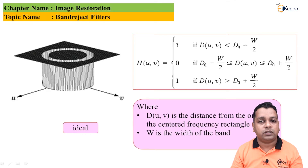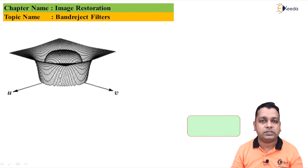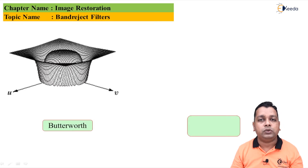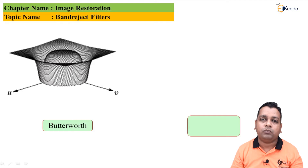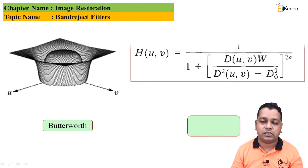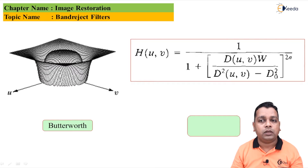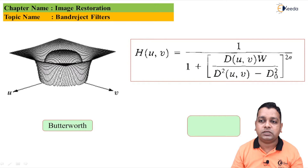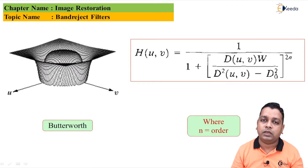Here, D(u, v) is the distance from the origin of the centered frequency rectangle, W is the width of the band, and D₀ is the radial center. For the Butterworth form, since the ideal case is not always practical, the filter function H(u, v) equals 1 divided by 1 plus [D(u,v)·W / (D²(u,v) − D₀²)]^(2n), where n is the order of the Butterworth filter.